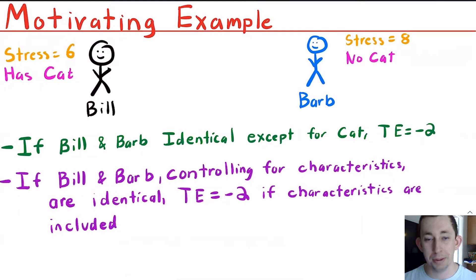Now it could be the case that Bill and Barb are not identical. There might be some other factors about Bill and Barb that affect their stress level. Those same factors might also affect whether or not Bill and Barb get a cat. So just like we said in some previous videos, maybe Bill has a much less stressful job in general than Barb. That probably makes Bill more likely to get a cat. It also makes Bill less likely to have high stress levels. And alternatively for Barb, if she's got a more stressful job, she's probably less likely to get a cat, and she's probably more likely to have a higher stress level.